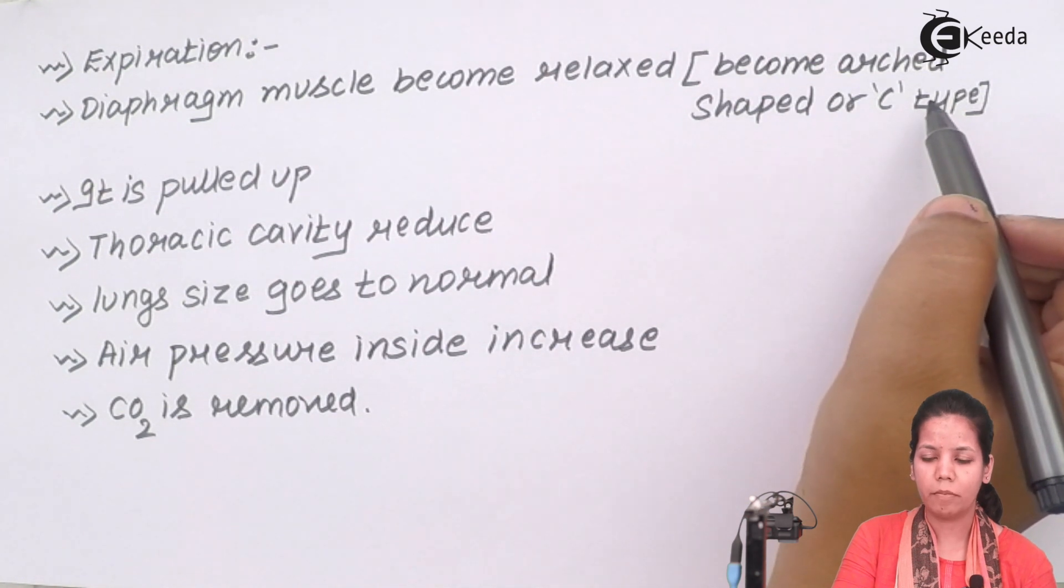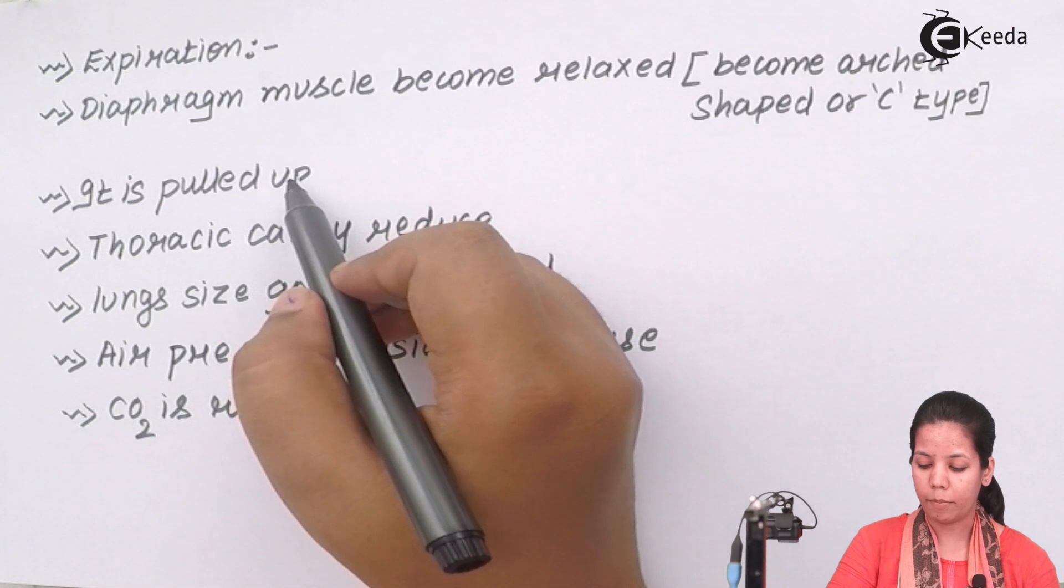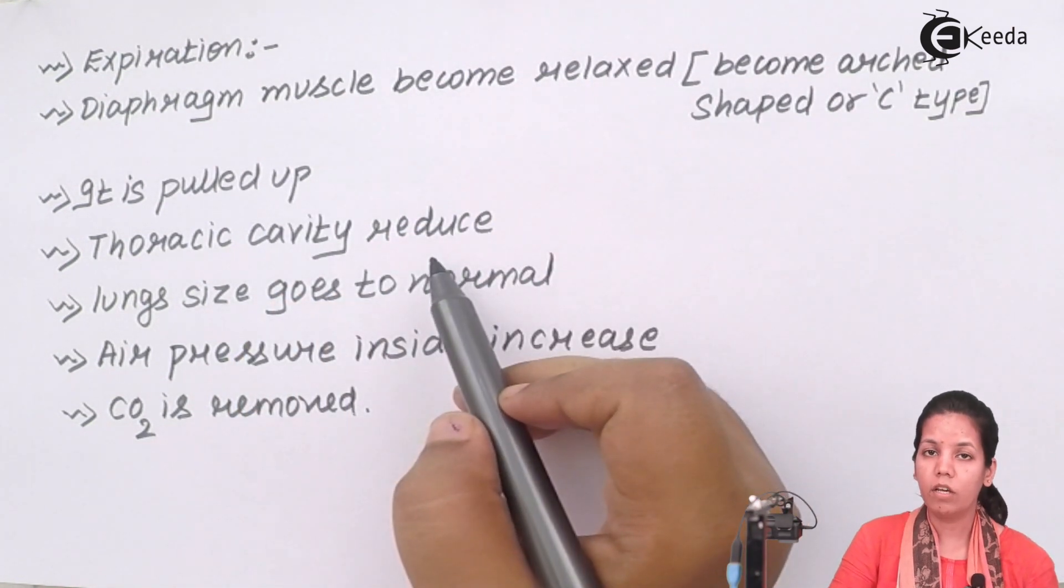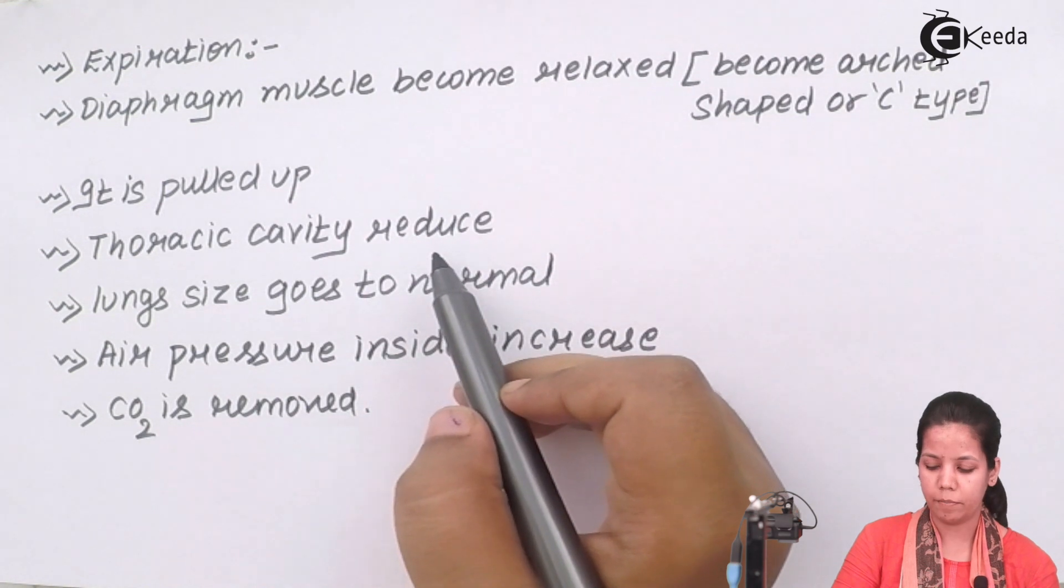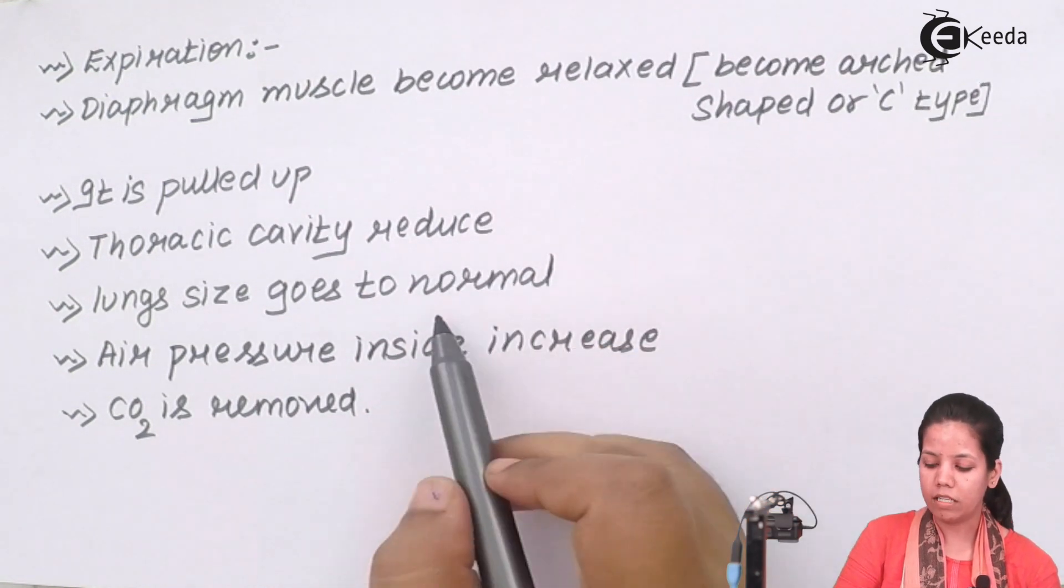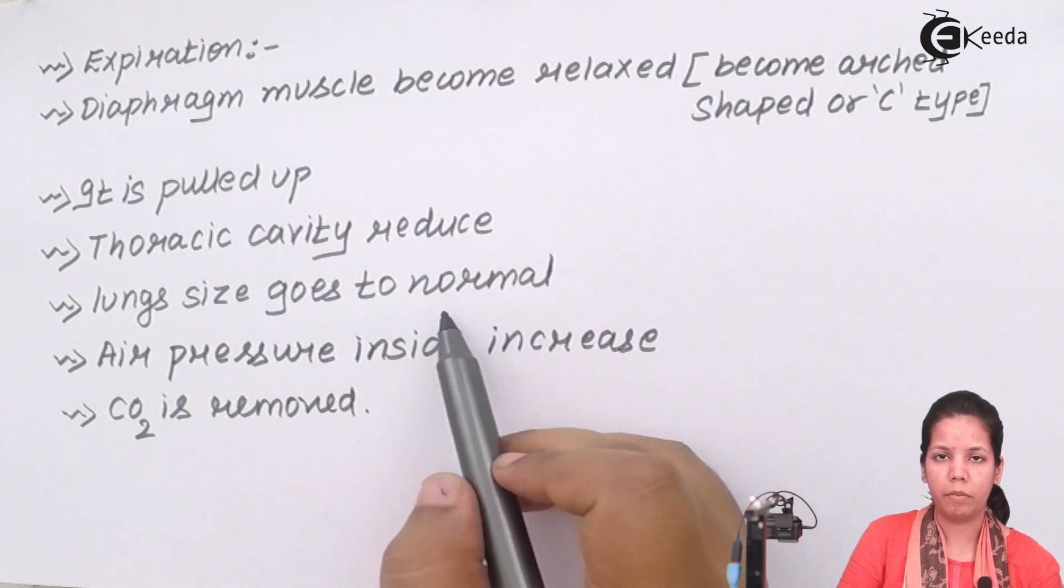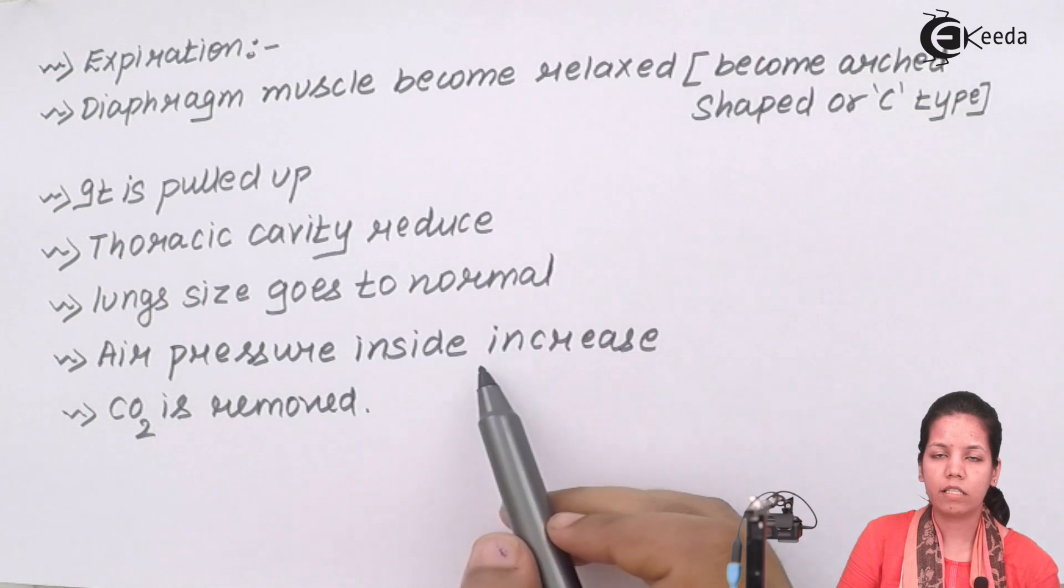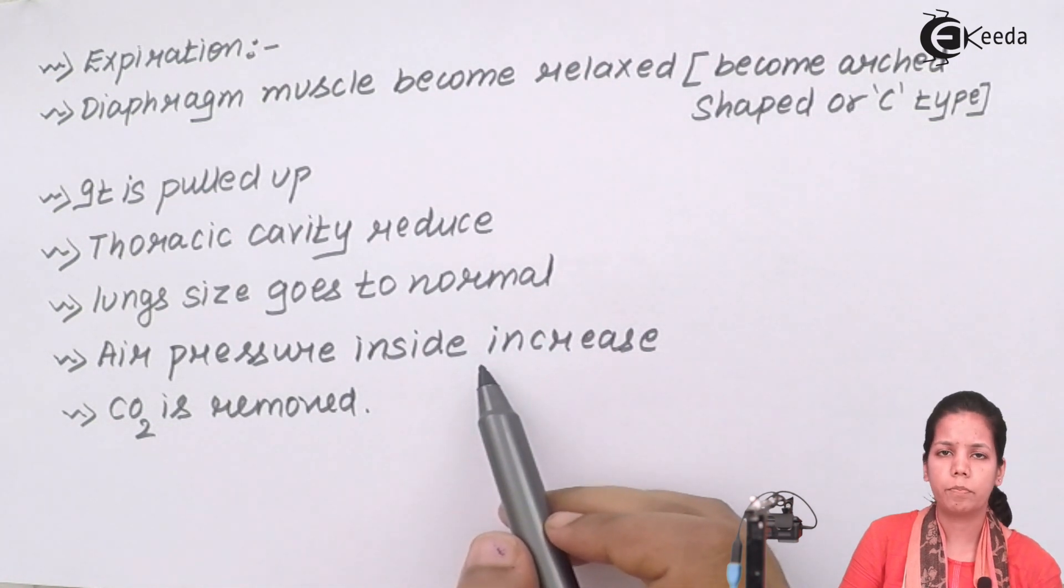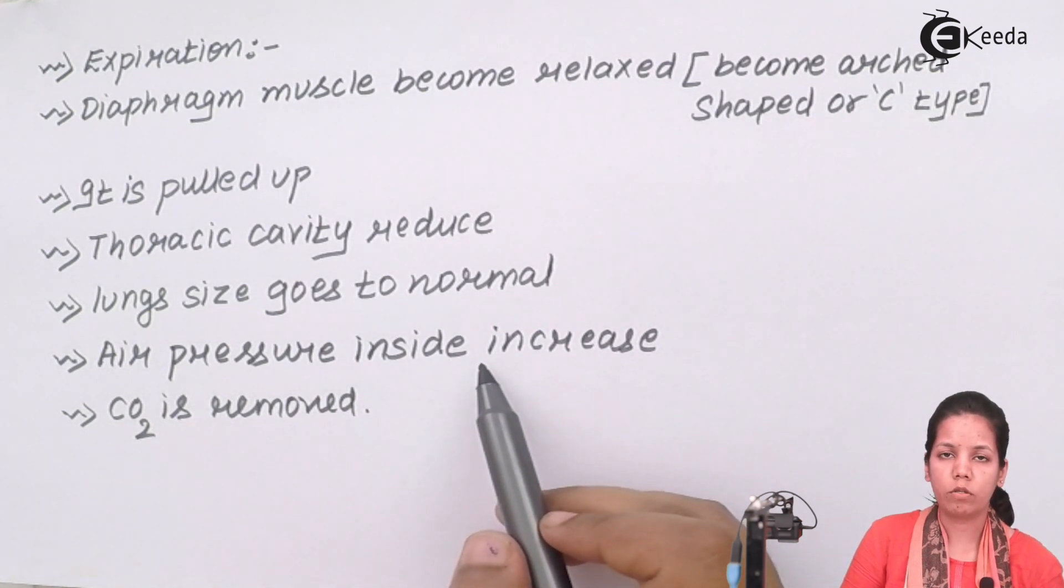And once that happens your thoracic cavity will reduce because this arc shaped structure will take little bit space. Once that happens your lung size goes back to normal size because initially lungs were taking a little bit space due to which air pressure inside will increase. Obviously there will be less an amount of space available for all the molecules.